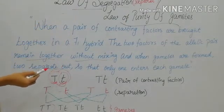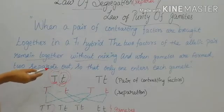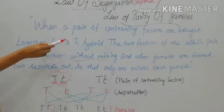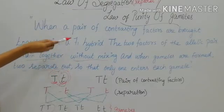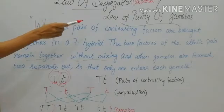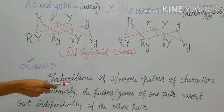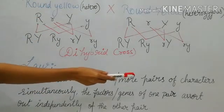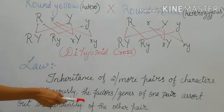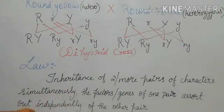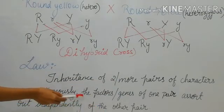Even though these alleles stay together, their characters will not get mixed — they remain very pure. Hence, this law is also known as Law of Purity of Gametes. The last law is Law of Independent Assortment, which states that during the inheritance of two or more pairs of characters simultaneously, the factors or genes of one pair sort out independently of the other pair.